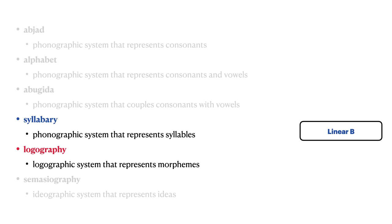Linear B is also a mixed system that has logographic and syllabic components. In Linear B, those components are more distinct than they are in Chinese, where some symbols are logographic, while others are syllabic.